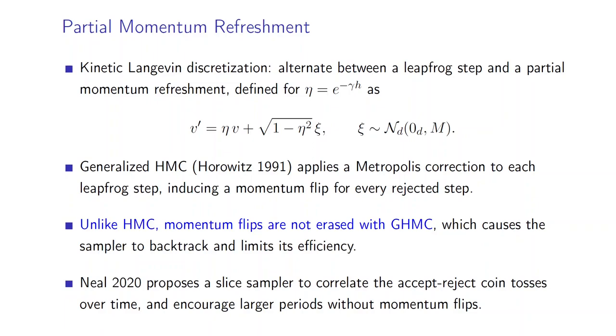A discretization of the kinetic Langevin diffusion is to alternate between a leapfrog step and a partial momentum refreshment defined as follows. This is what is done with the GHMC algorithm introduced by Horowitz in 1991, which applies a Metropolis correction to each leapfrog step, inducing a momentum flip for every rejected step. And we can see here when we have partial refreshment instead of full refreshment, then momentum flips are no longer fully erased with GHMC, which causes the sampler to backtrack and limit its efficiency.